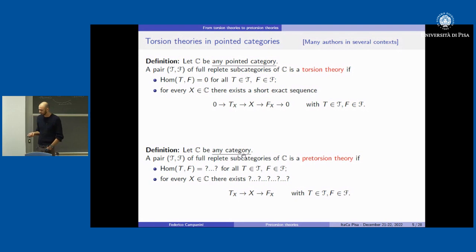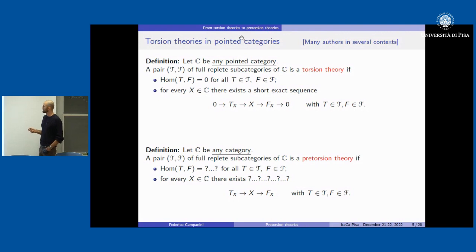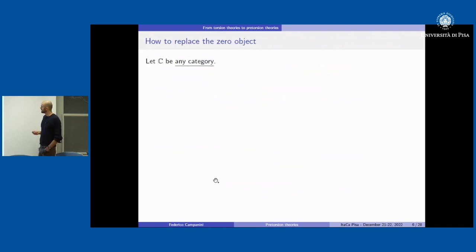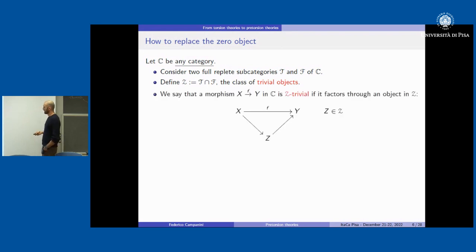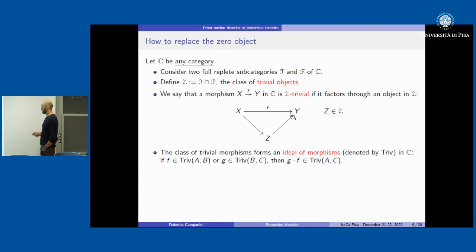But what if we try to do something in any category — removing the need to have a zero object? We have problems in both conditions: in the no-morphism condition and in the definition of a short exact sequence. So the first thing we do is start with two subcategories T and F, and allow a possible intersection, which we call Z — the class of trivial objects. A morphism is trivial if it factors through something in Z.